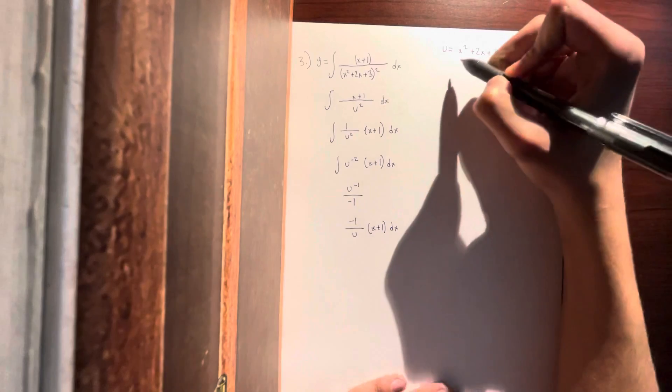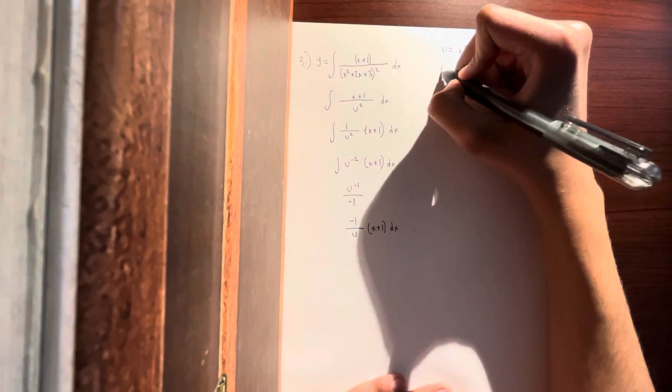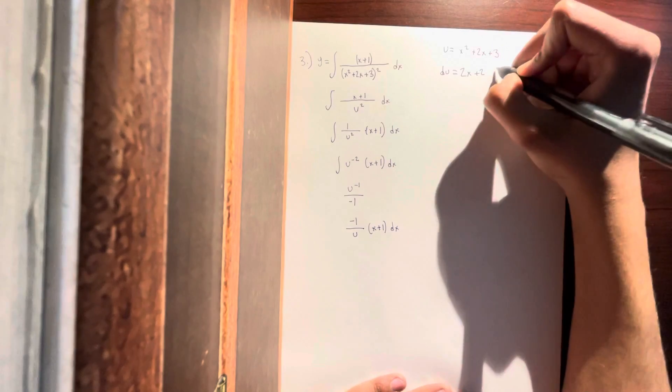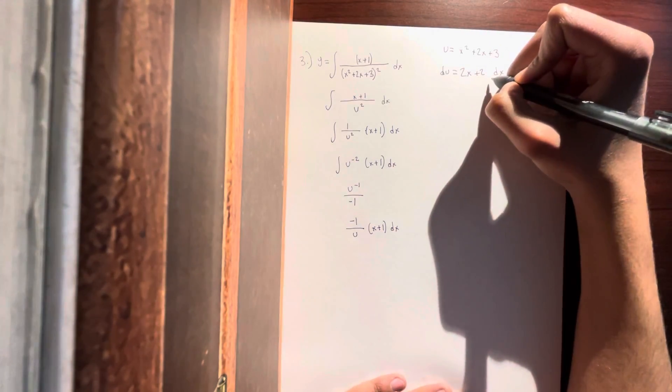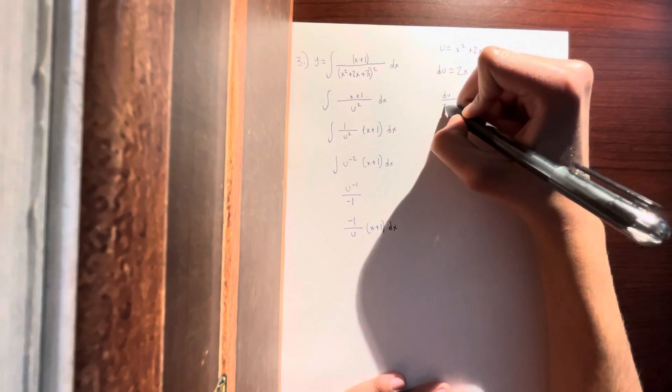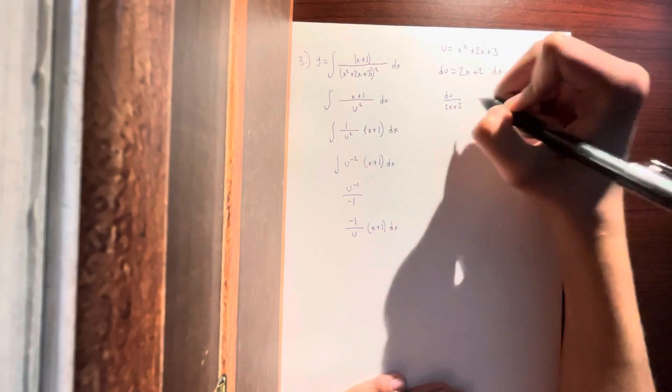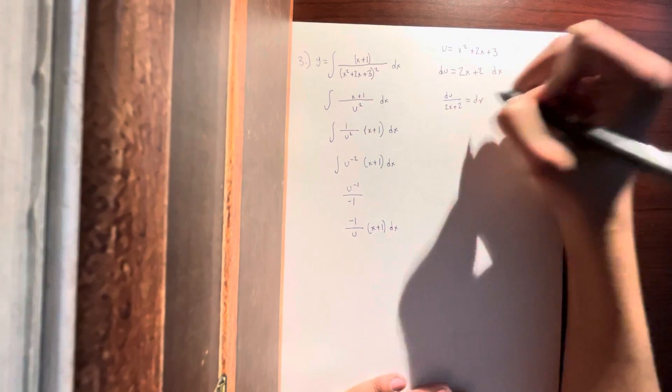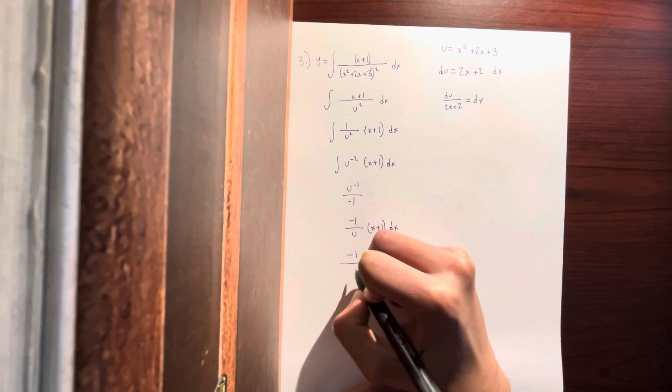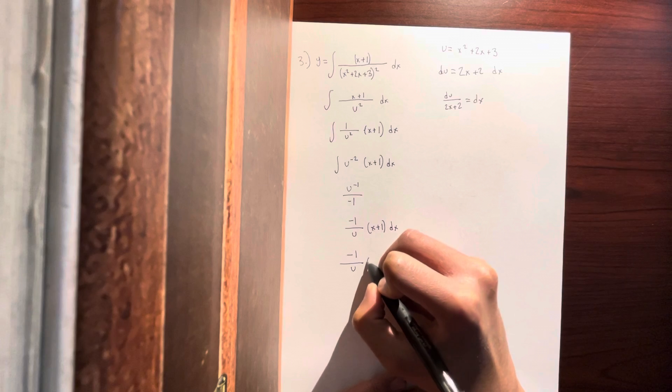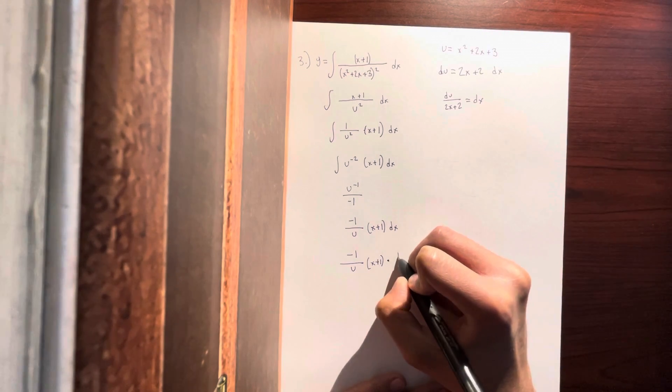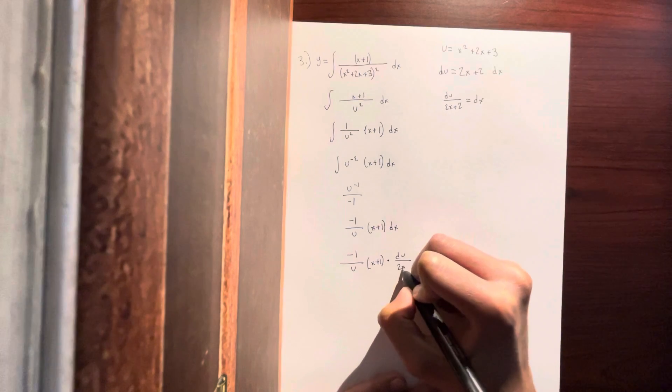You then have to find dx. So what you do is du = (2x + 2)dx. And then you solve for dx and you get du/(2x + 2) = dx. You then plug it in and get (-1/u)(x + 1)(du/(2x + 2)).